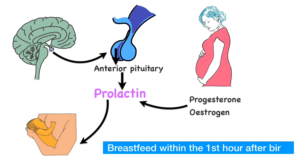Most mothers breastfeed their baby within the first hour after birth. At birth, estrogen and progesterone levels fall down due to the loss of the placenta. So prolactin inhibition is lost due to the low estrogen and progesterone levels, and then prolactin stimulates milk secretion.